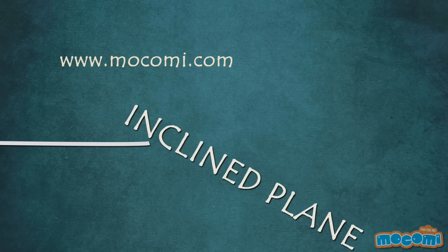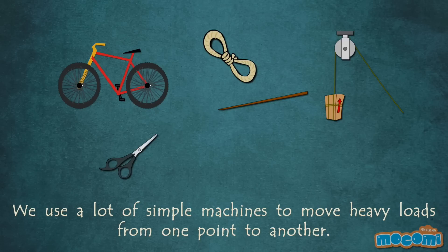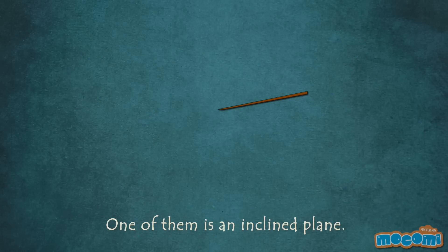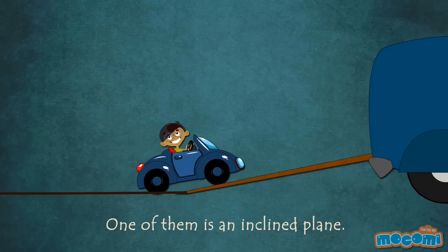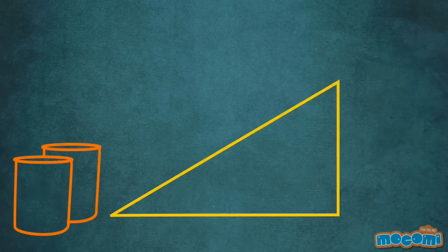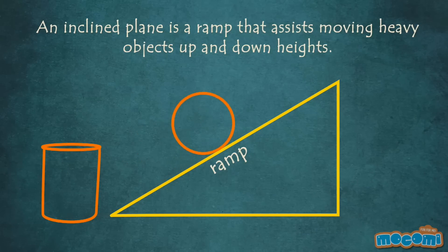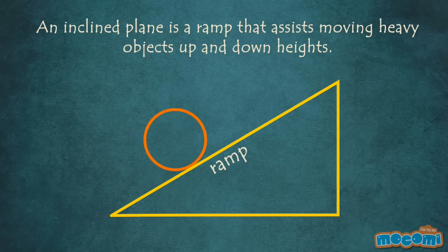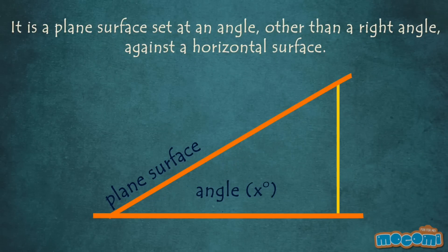What is an Inclined Plane? We use a lot of simple machines to move heavy loads from one point to another. One of them is an inclined plane. An inclined plane is a ramp that assists in moving heavy objects up and down heights. It is a plane surface set at an angle other than a right angle against a horizontal surface.